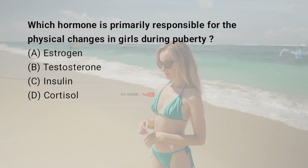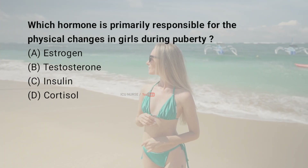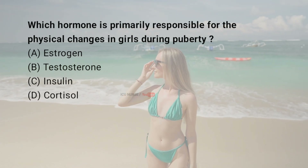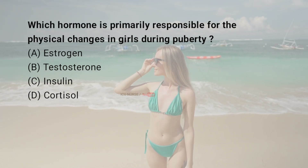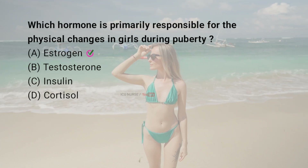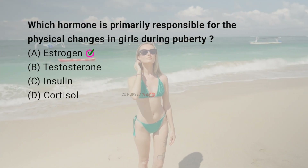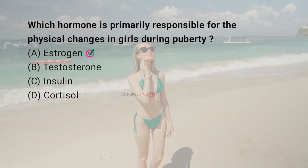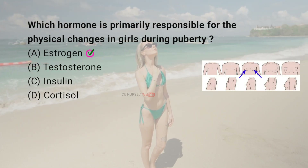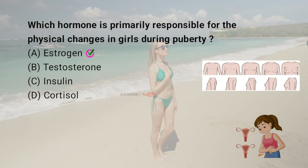Which hormone is primarily responsible for the physical changes in girls during puberty? A: Estrogen, B: Testosterone, C: Insulin, D: Cortisol. The correct answer is A: Estrogen. Estrogen is the main hormone responsible for the development of secondary sexual characteristics in girls, including breast development, body fat distribution, and the onset of menstruation.